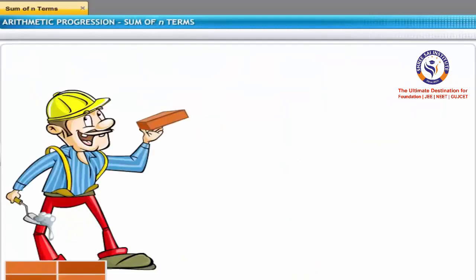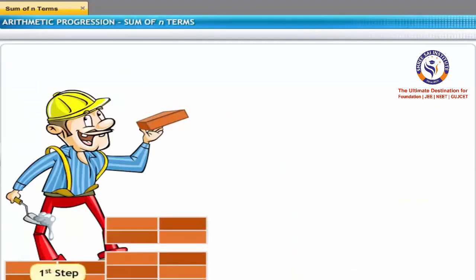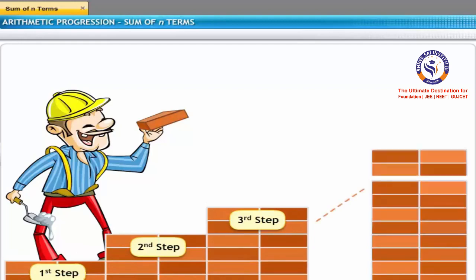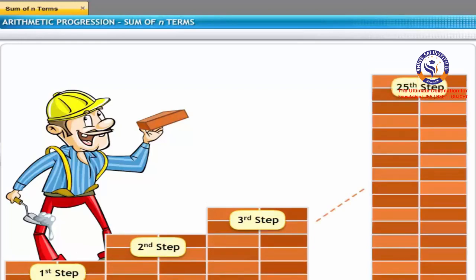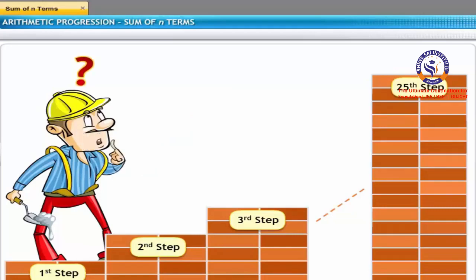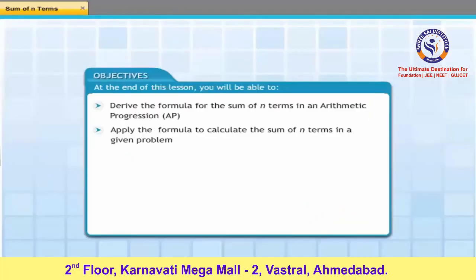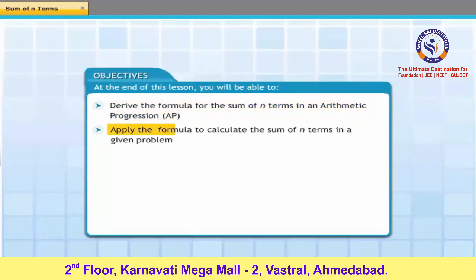A mason is laying bricks for a narrow staircase. For every step, he needs to add 4 bricks to the previous step. The staircase requires 25 steps. If you were to order the bricks for the mason, how would you determine the total number of bricks required for the staircase? In this lesson, you will learn how to calculate the sum of N terms in an AP. At the end of the lesson, you will be able to derive the formula for the sum of N terms in an arithmetic progression, and apply the formula to calculate the sum of N terms in a given problem.